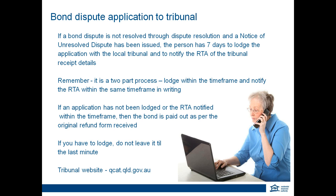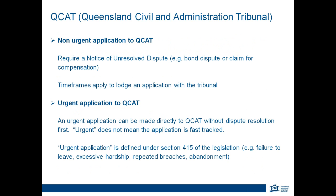You can also phone QCAT on 1300 753 228. QCAT is the Queensland Civil and Administrative Tribunal. There are two main types of applications under tenancy law: non-urgent and urgent applications. Non-urgent matters, such as a bond dispute or a claim for compensation, require a notice of unresolved dispute. For a bond dispute, you have the seven-day timeframe to lodge your application. For a tenancy matter or compensation claim, you have six months to lodge from the date you were aware of the event or breach. Urgent applications can be made directly with QCAT without dispute resolution first, and are listed under Section 415 of the legislation.